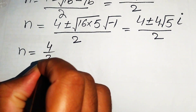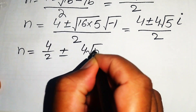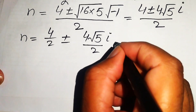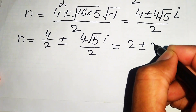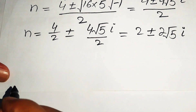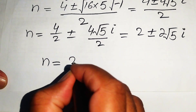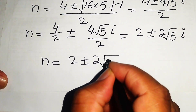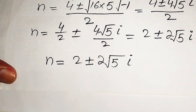Separating the fraction, we get 4 over 2 plus or minus 4 times root 5 times i over 2. After cancellation, n equals 2 plus or minus 2 times the square root of 5 times i. These are the two values of n.